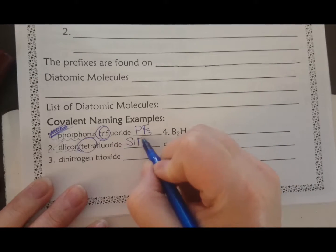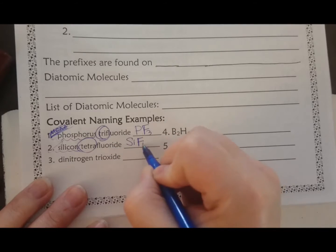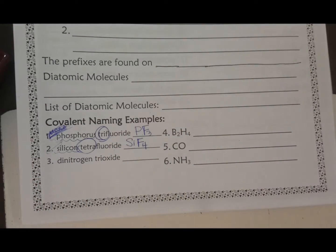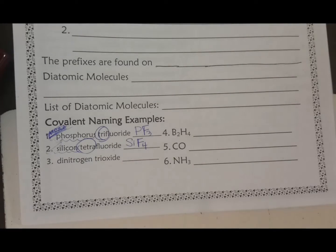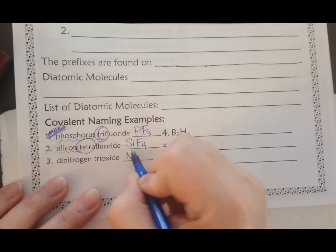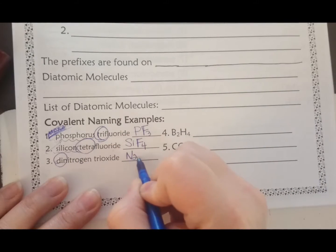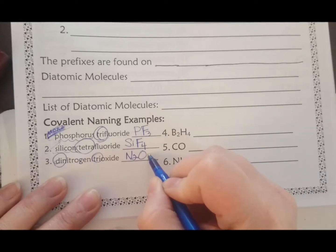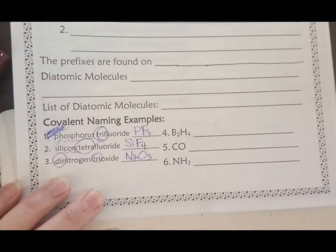So writing formulas for covalent compounds are super duper duper easy. Dinitrogen - nitrogen is N, di means two. Trioxide - oxide means oxygen, tri means three.